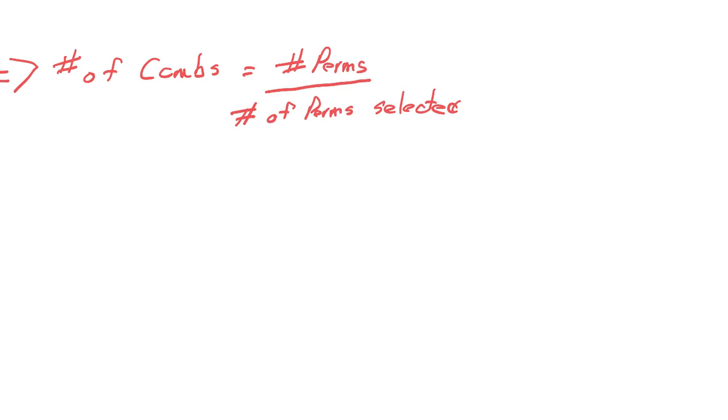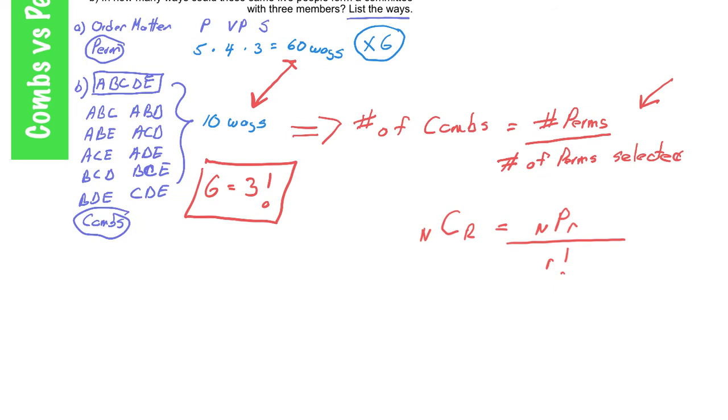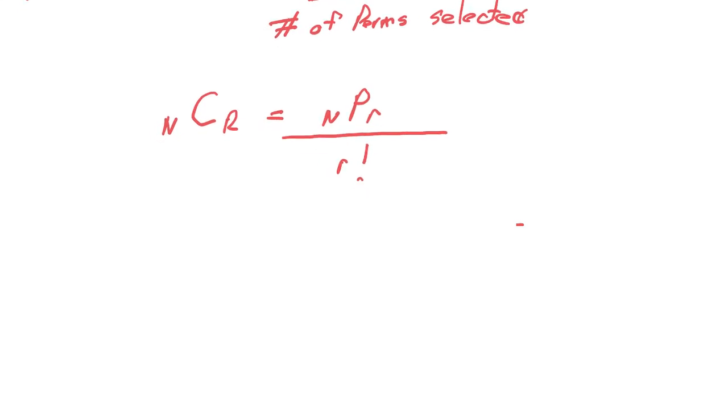So the difference is a factor of 6 or 3 factorial. So going back to the number of combinations, instead of using NPR for perms, we're going to use the notation NCR to denote combinations. And that, as I've just said up here, is permutations, which is the aforementioned NPR, divided by R factorial. Again, the difference between 60 and 10 is that R factorial, the number of perms selected. So just to further explain the combination formula, this will translate into the permutation formula, which is N factorial over N minus R factorial. So that is the permutation formula right there.